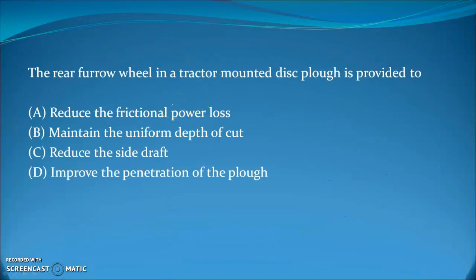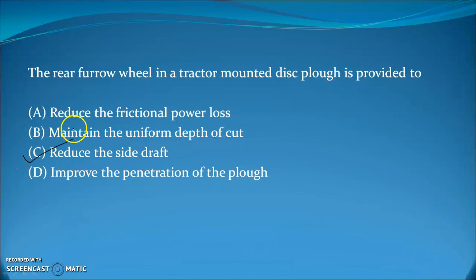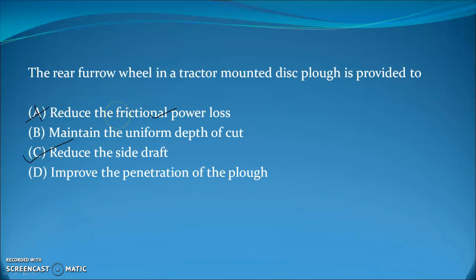Next question: the rear furrow wheel in a tractor-mounted plow is provided to do what? Generally the furrow wheel is used to take the side draft. So the answer will be C — to reduce the side draft. The other option of reducing friction of the furrow wall is not correct because the furrow wheel touches the wall and there would actually be more friction, not less.